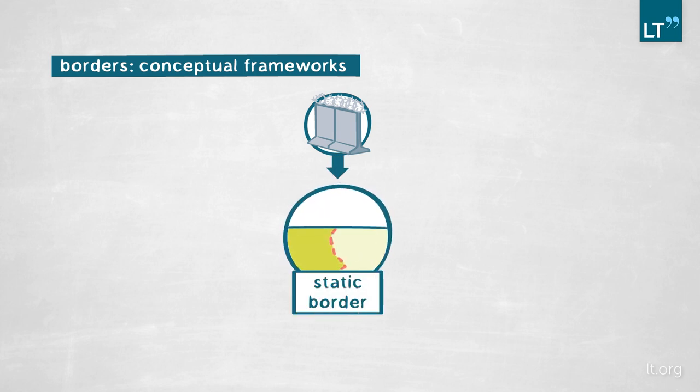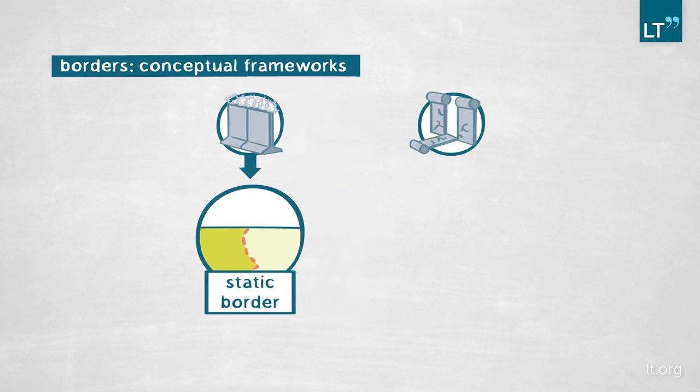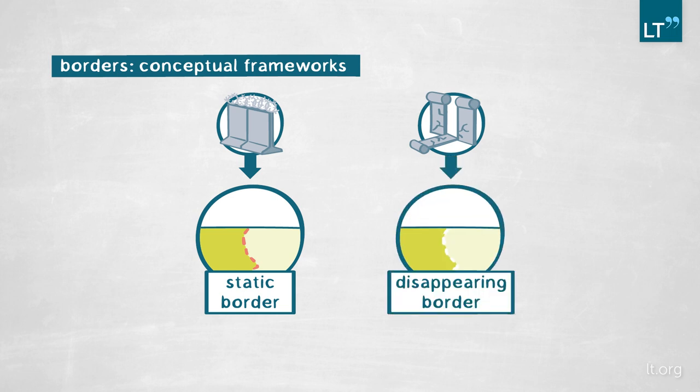This is the classic Westphalian image of a very clear line where one country ends and the other begins. On the other hand, there's another theoretical model that we find in the literature. This comes to us especially from the post-Berlin Wall period, so after 1989. The second theoretical construct I'll refer to as the disappearing border — a border that no longer exists, or the thought was, post-1989, that borders will become insignificant relics of a bygone era.